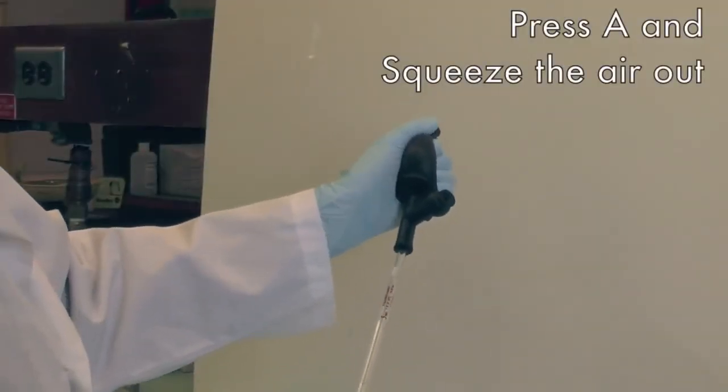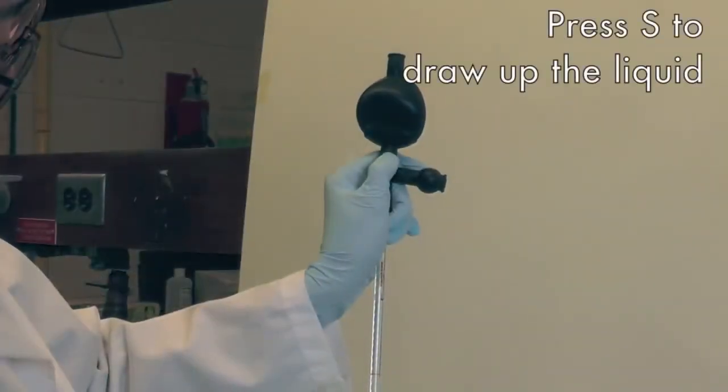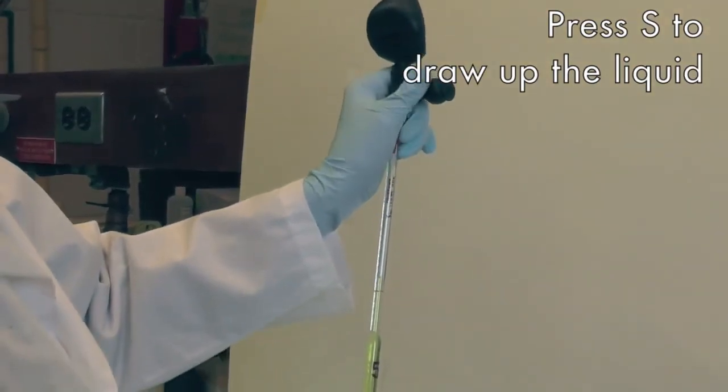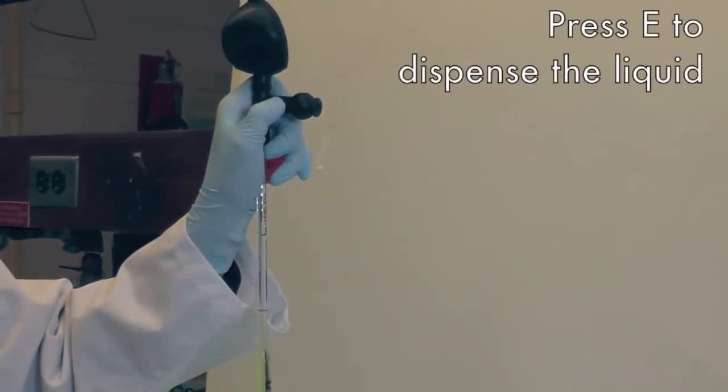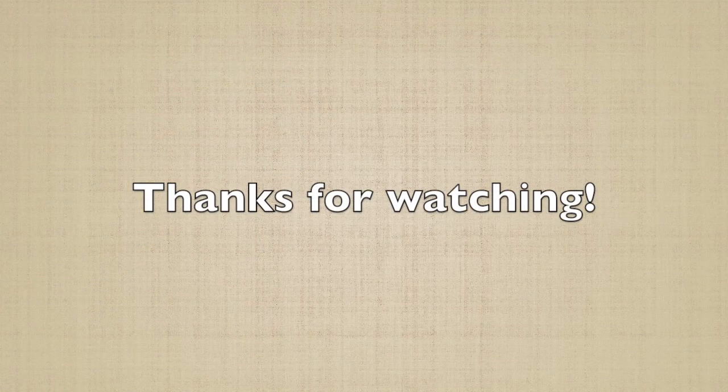Attach the pipette, then press on A and squeeze the main body part to expel all the air. Insert the pipette into the solution, then press on S to draw the liquid up to the desired volume. Press on E continuously to dispense the liquid. Thank you for watching.